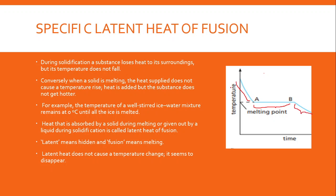We can divide the graph into three sections. The first section is clearly all liquid. The horizontal section we'll discuss shortly. From B onwards, we know it is completely solid. Between A and B, when the temperature does not change, if we talk about freezing, the molecules are coming closer — some are already in the solid phase, packed closer together, while some are still in the liquid phase, releasing energy, since during freezing energy is released and during melting energy is taken in.